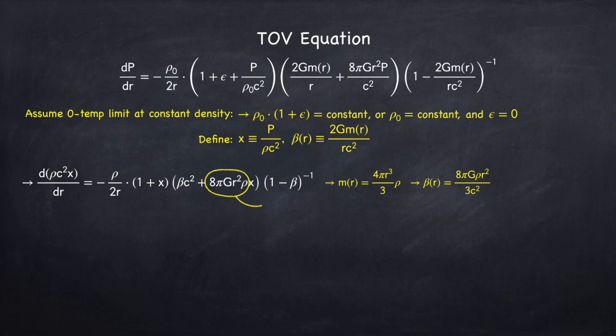Now take a look at this factor multiplying x right here. That's just equal to 3 beta c squared. Since beta is proportional to r squared, d beta dr is going to be 2 beta over r.